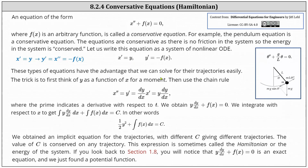These types of equations have the advantage that we can solve for their trajectories easily. The trick is to think of y as a function of x for a moment, then use the chain rule. Referring back to our work in blue, we know x double prime is equal to y prime. Applying the chain rule and thinking of y as a function of x, we have y prime equals dy dx times x prime. Since x prime equals y, we have y times dy dx. So x double prime equals y times dy dx.